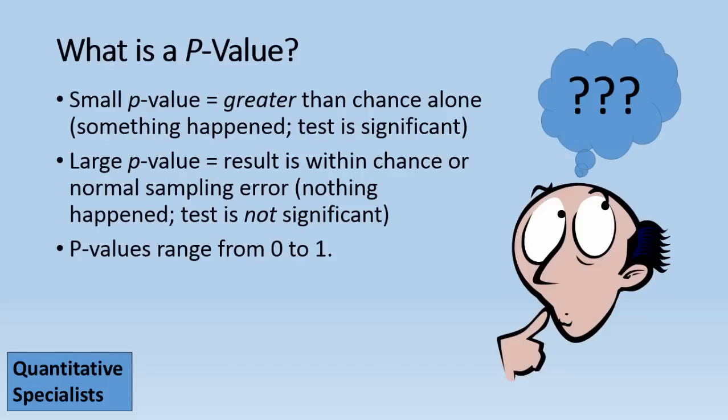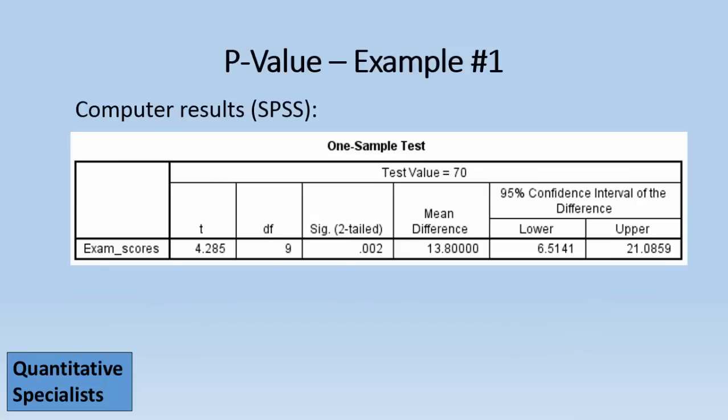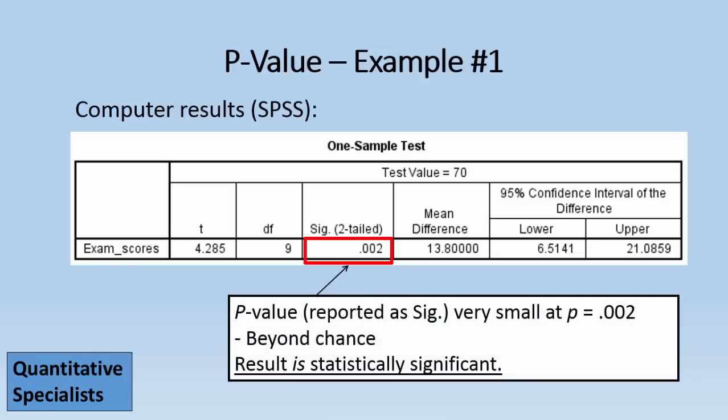And p-values range from 0 to 1. Let's go ahead and take a look at some p-values in popular computer output. So here's SPSS, and the p-value is given where it says SIG two-tailed. And it's very small in this example at .002.